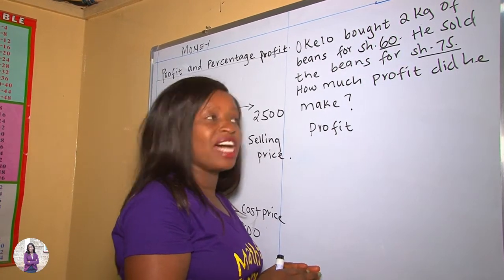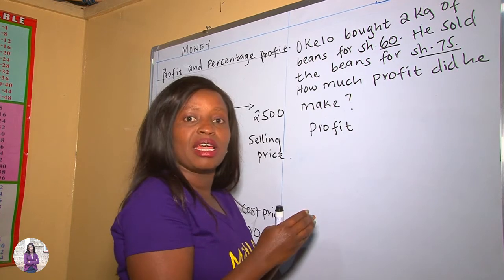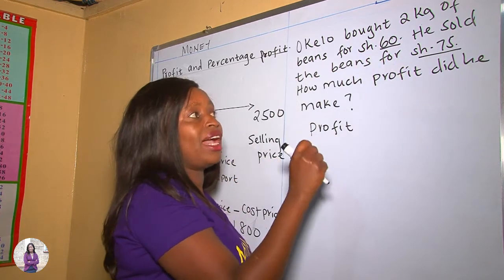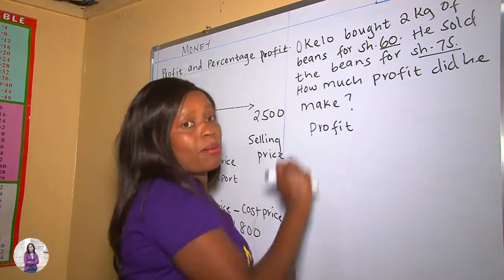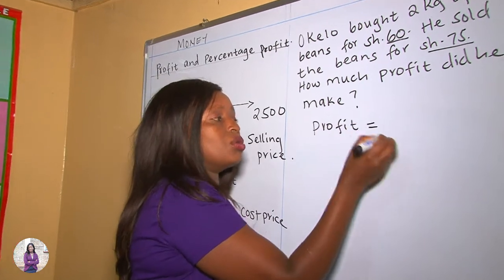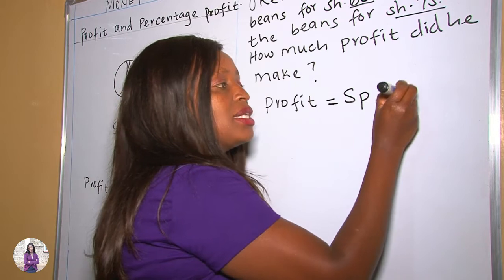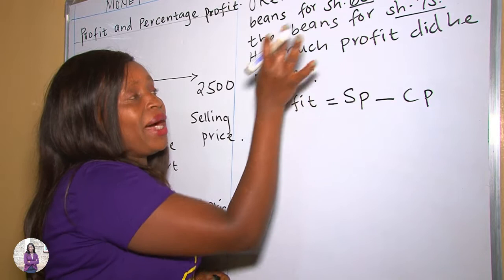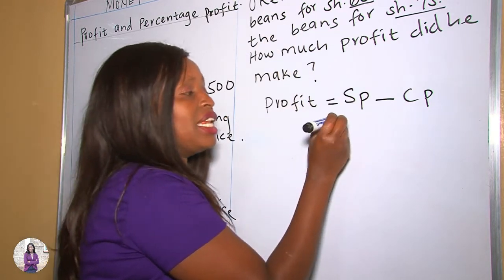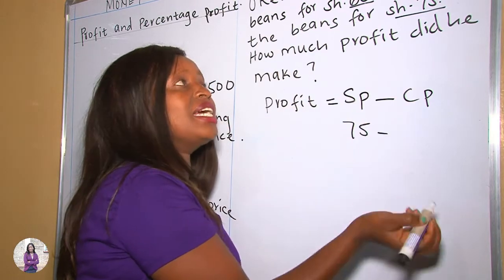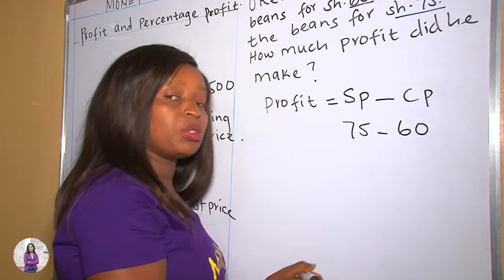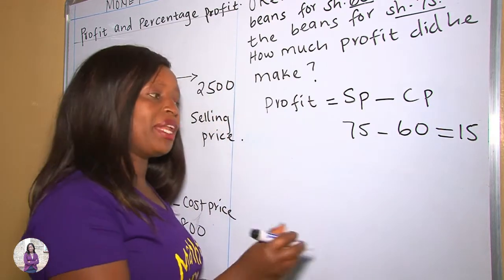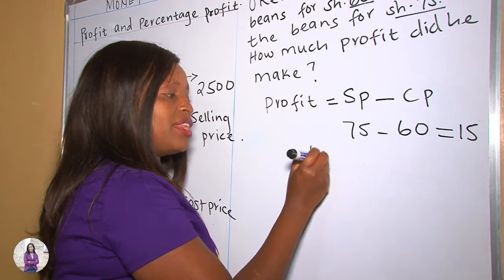Therefore, automatically as you read the question, you can predict whether he made a profit or a loss. In this case, he made a profit since he sold the item higher than the buying price. Therefore, profit equals selling price take away cost price. In our example, the cost price is only the buying price. So profit is 75 take away 60, which equals 15 shillings. Therefore, he made a profit of 15 Kenyan shillings.